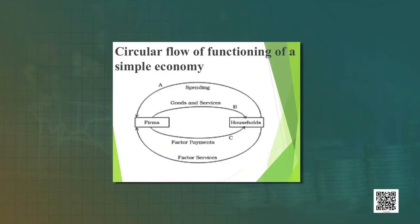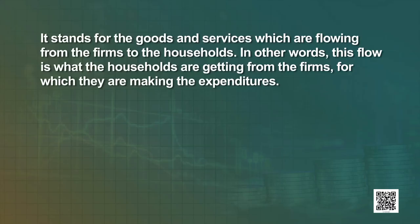The other channels of disposing their income are closed. It is assumed that the households do not save. They do not pay taxes to the government since there is no government, and neither do they buy imported goods since there is no external trade in this simple economy. In the diagram, the uppermost arrow going from the households to the firms represents the spending the households undertake to buy goods and services produced by the firms. The two arrows on the top represent the goods and services market.